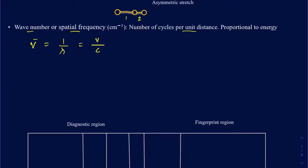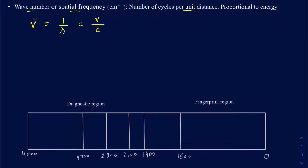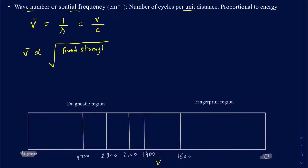The range for the wave number goes from 0 to 4,000 cm⁻¹ on the graph. The wave number is dependent on two things: it is directly proportional to the square root of bond strength, and inversely related to the reduced mass.